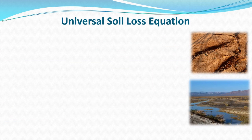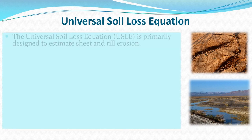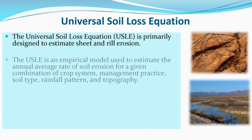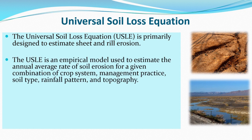The Universal Soil Loss Equation can be used to predict soil loss. It primarily estimates loss from sheet erosion and rill erosion. It is an empirical model that estimates the average annual rate of soil erosion for a given combination of crop system, management practice, soil type, rainfall pattern, and topography — taking all these factors into consideration.